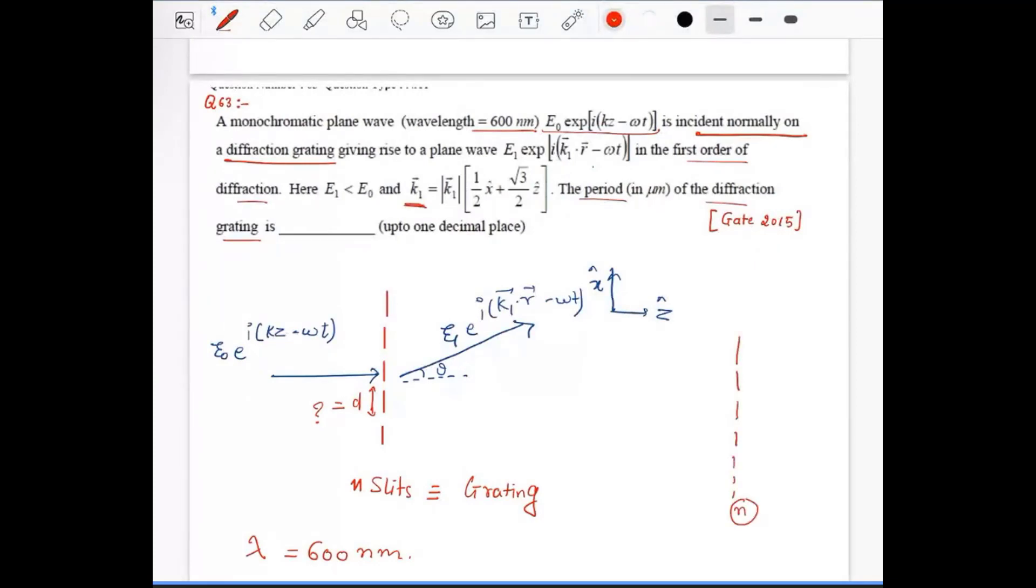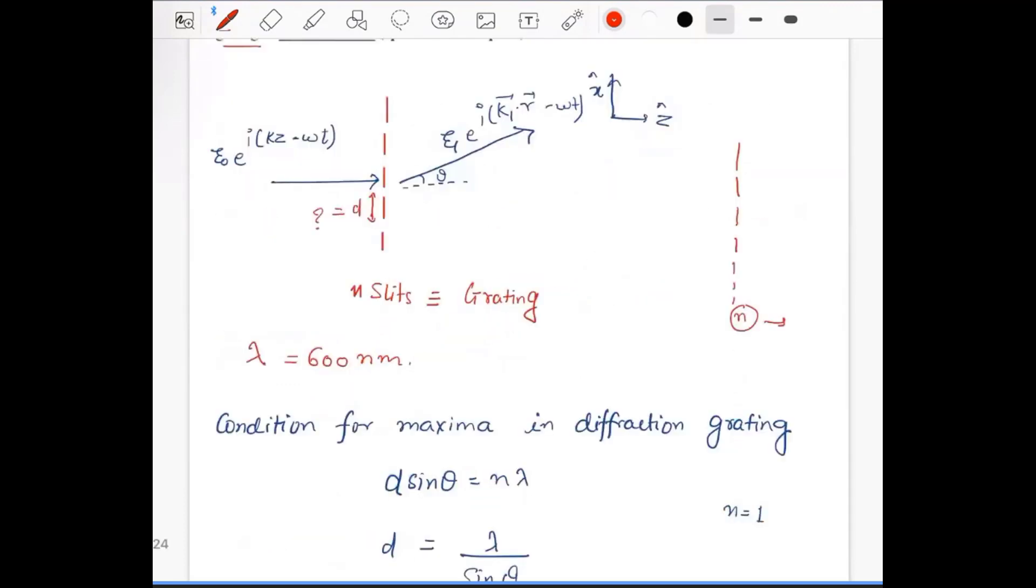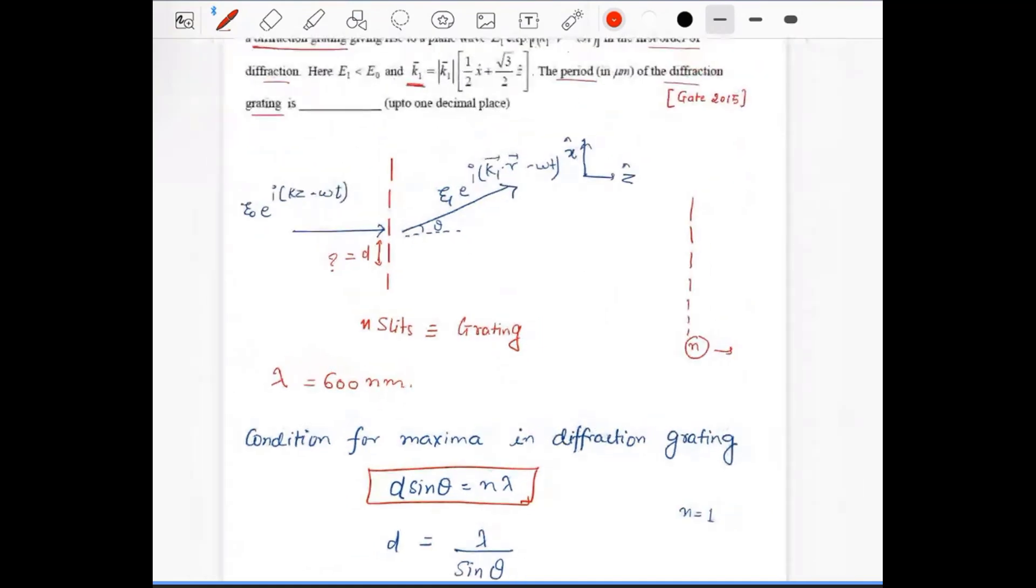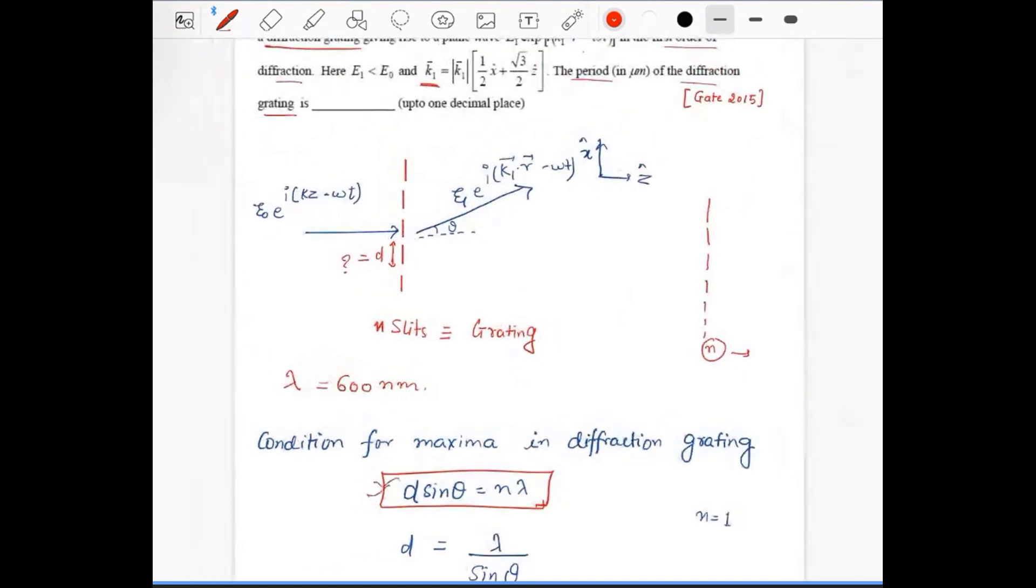So diffraction grating is an n-series, and the condition for the maxima for the case of grating is given by d sin θ = nλ. It's a complete long expression to calculate this condition.